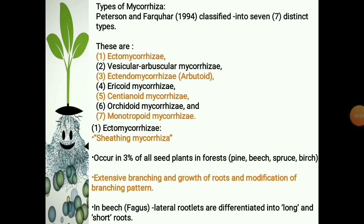Peterson and Farker in 1994 classified the mycorrhizae into seven distinct types: ectomycorrhizae, vesicular arbuscular mycorrhizae, ectendomycorrhizae, ericoid mycorrhizae, gentianoid mycorrhizae, orchidoid mycorrhizae, and monotropoid mycorrhizae.